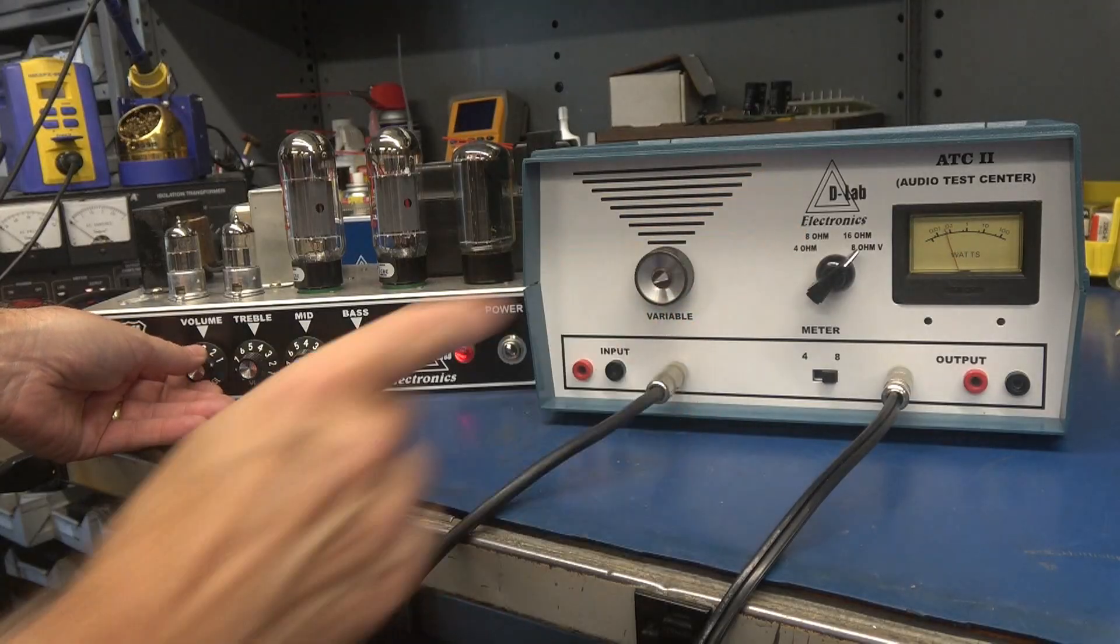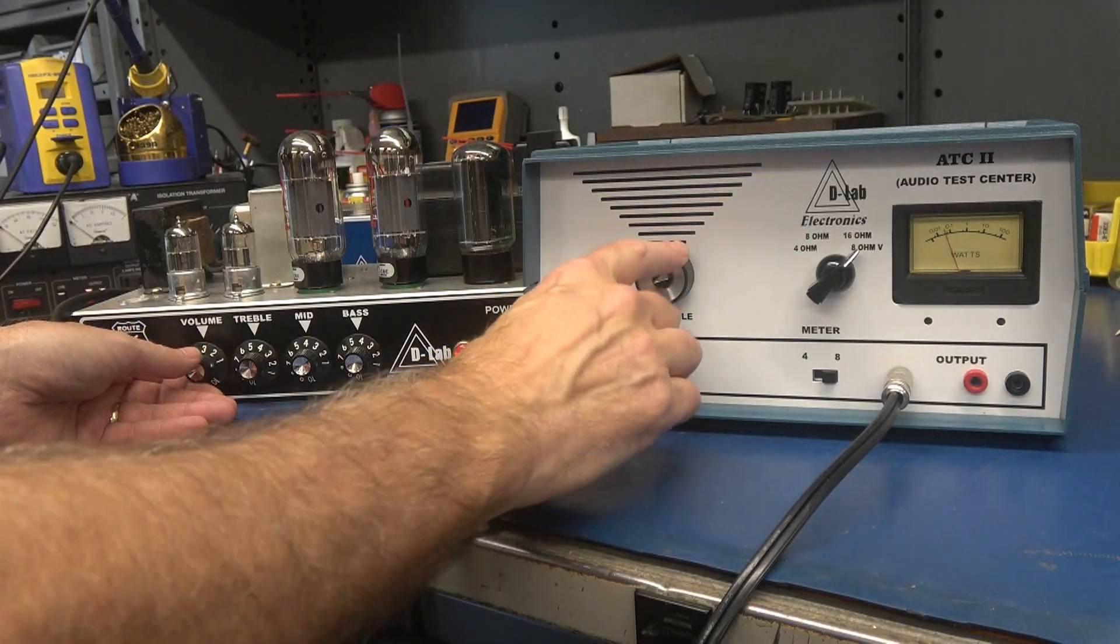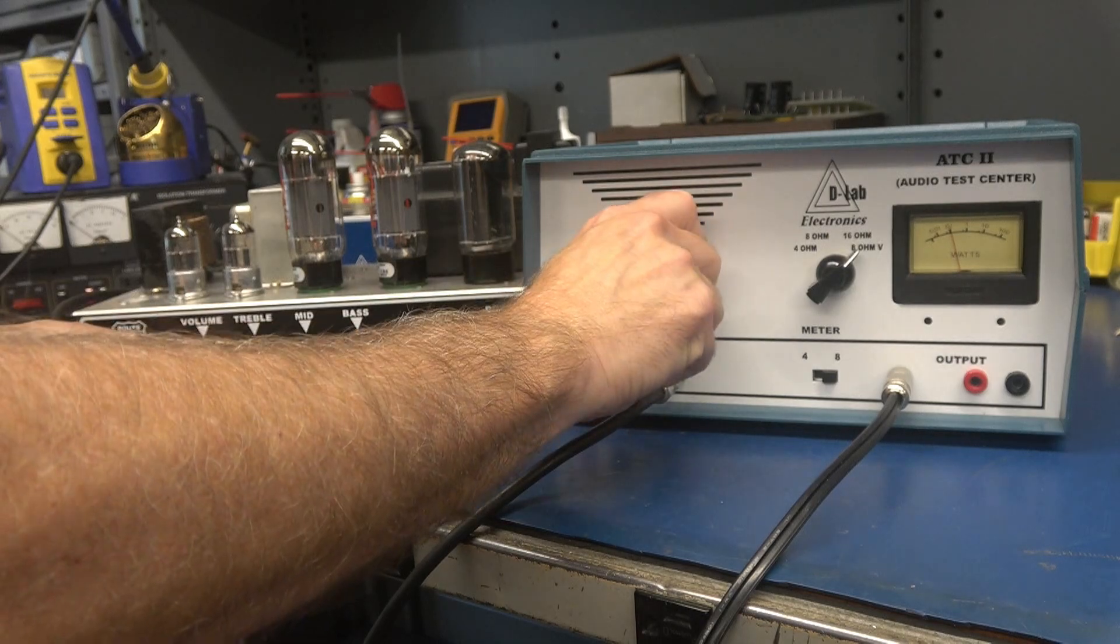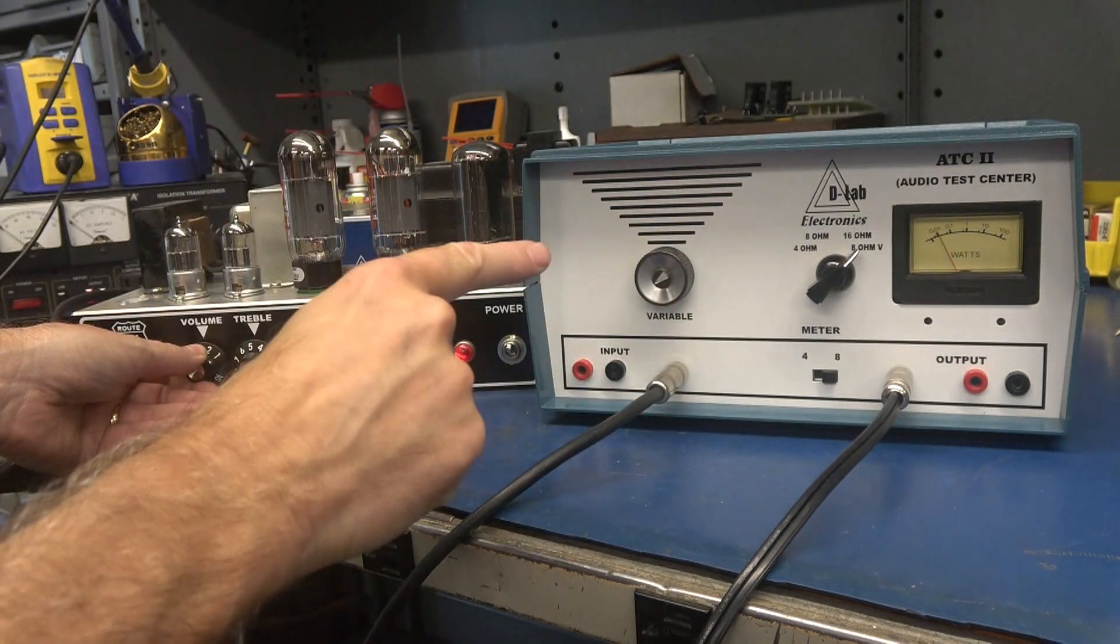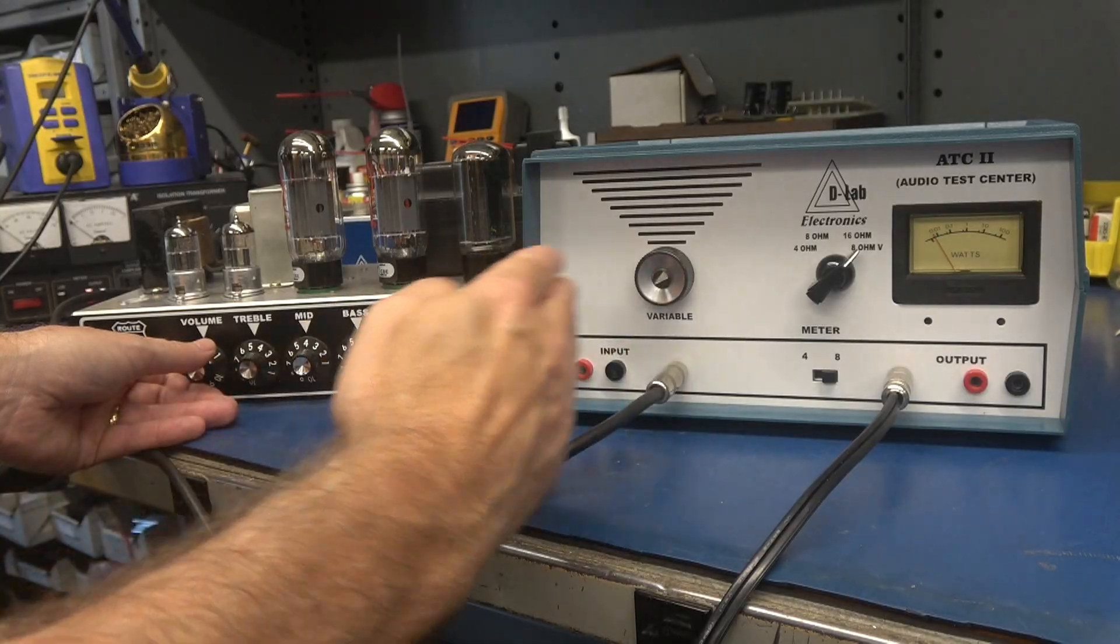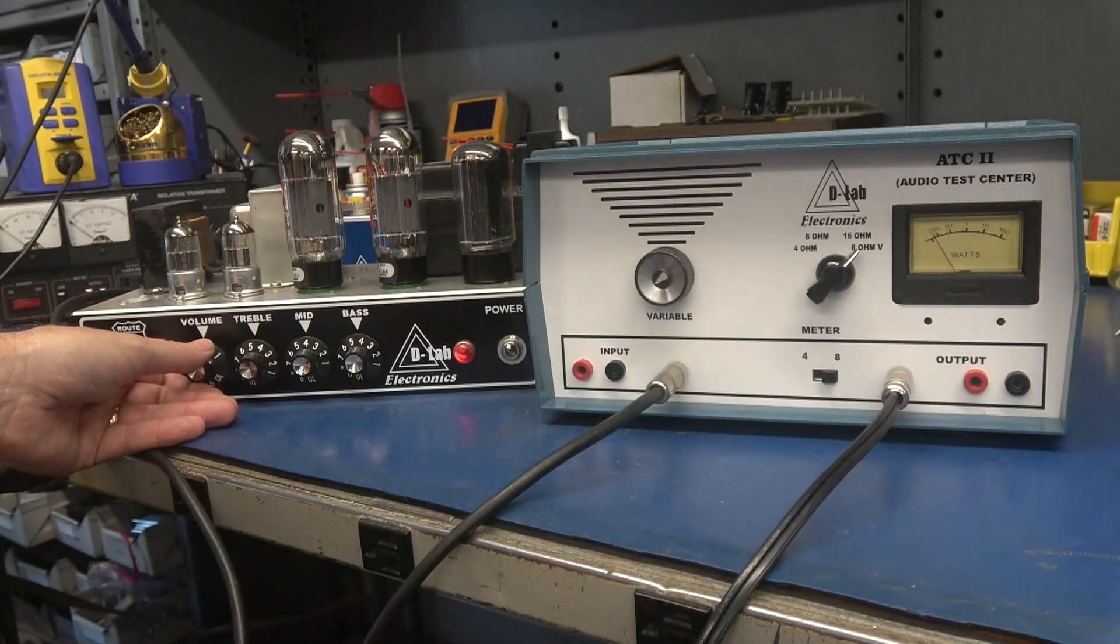Now you'll see that the watt meter is not varying when I'm turning the variable control. That's because the internal dummy load resistors are absorbing that power. This is simply panning power out to your external speaker.